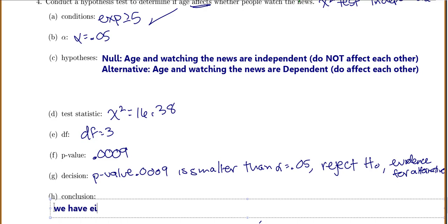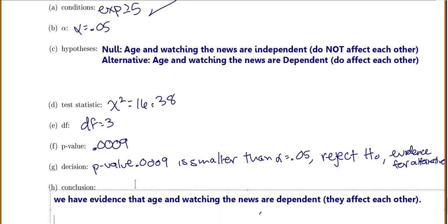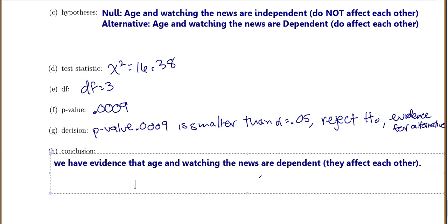So we have evidence that age and watching the news are dependent, meaning they affect each other.